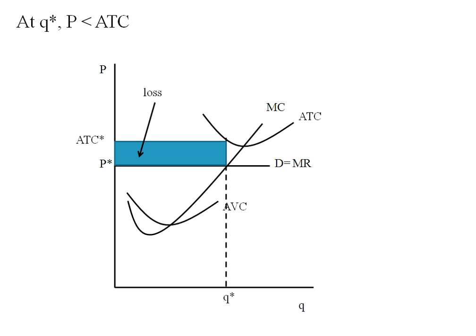So this will be illustrating our loss. Now, notice we're still above the average variable cost. So this firm should be producing.